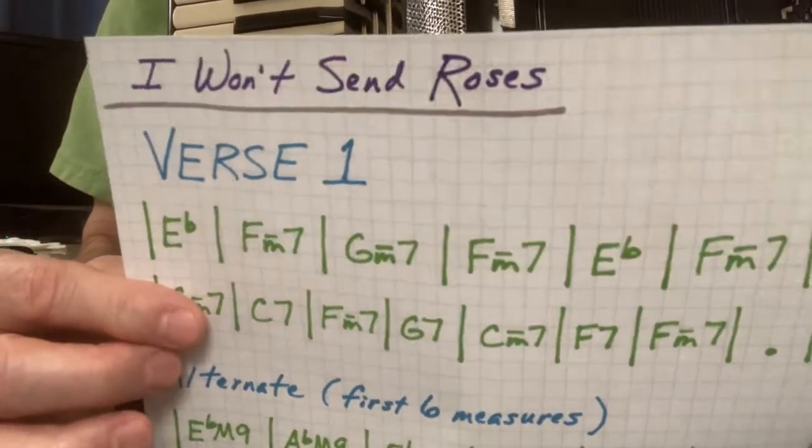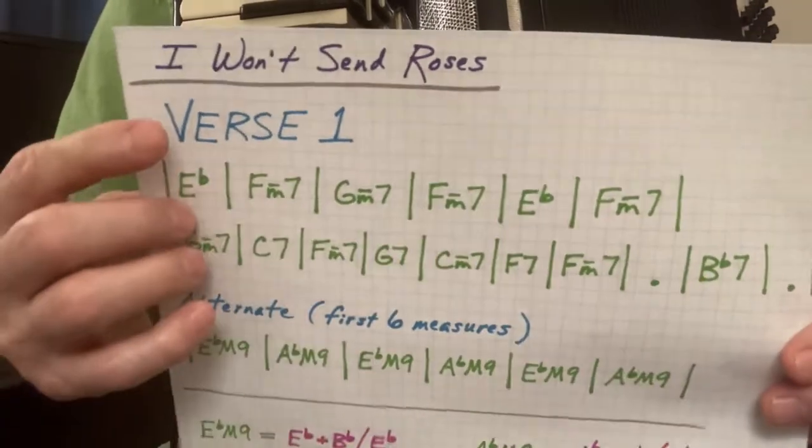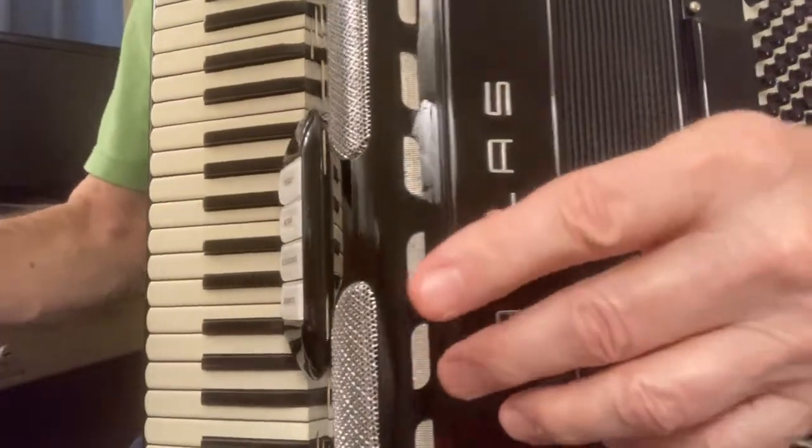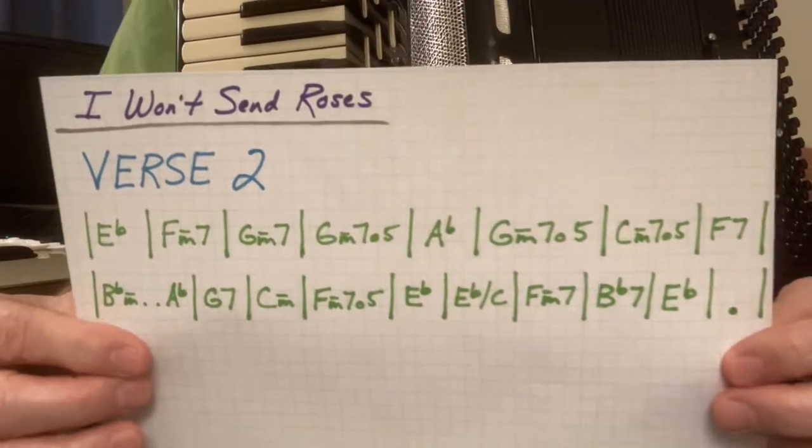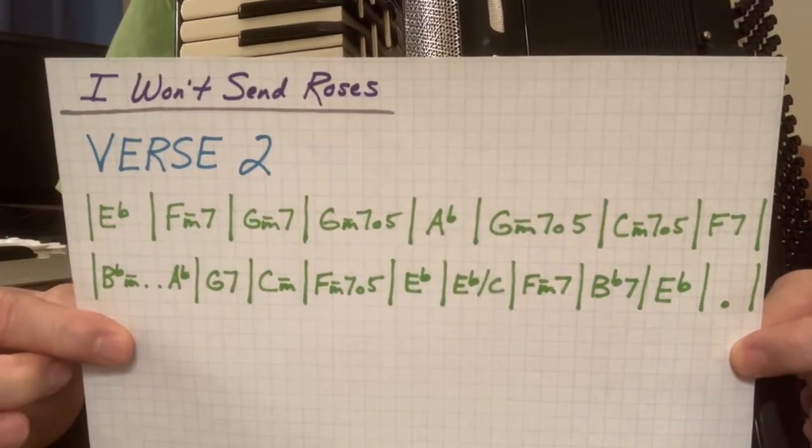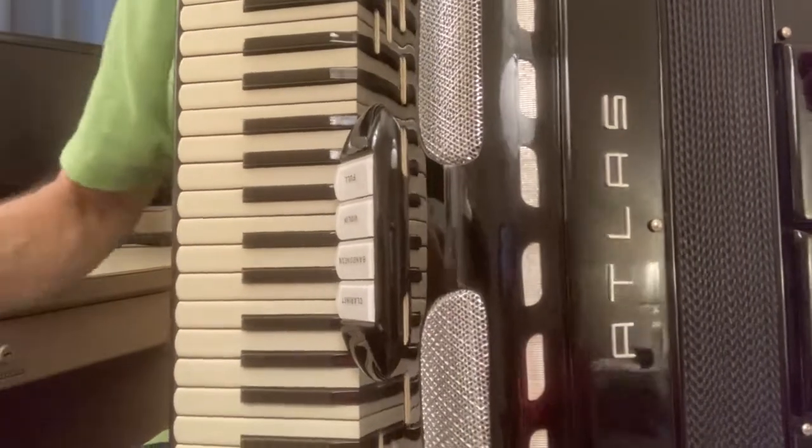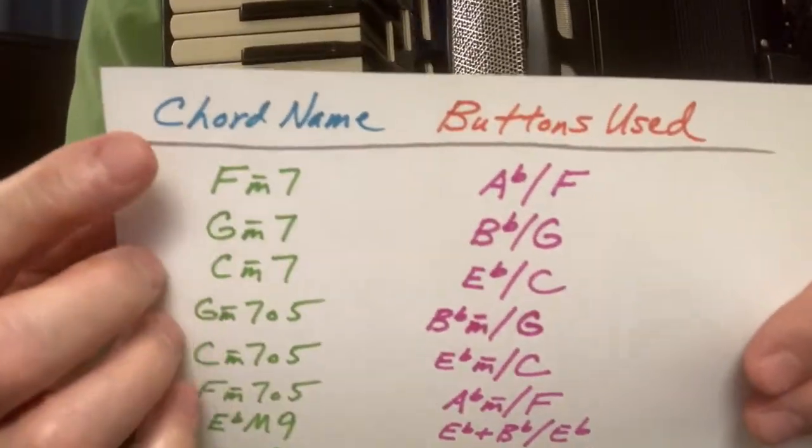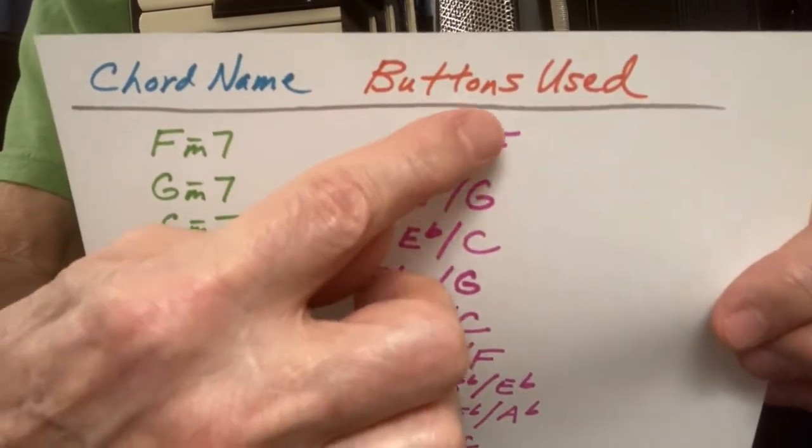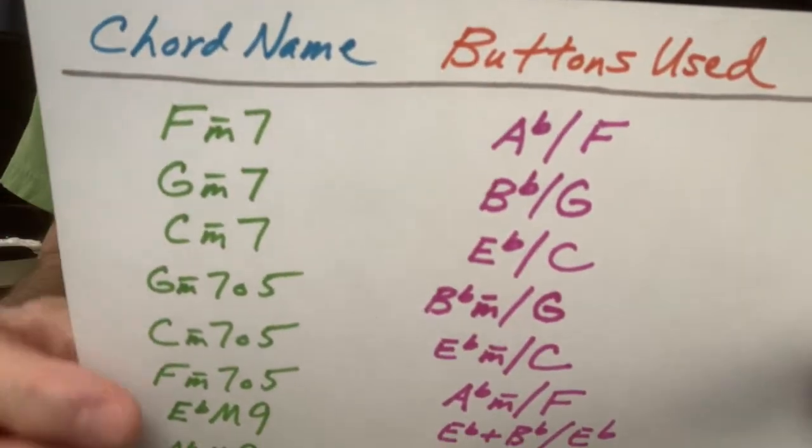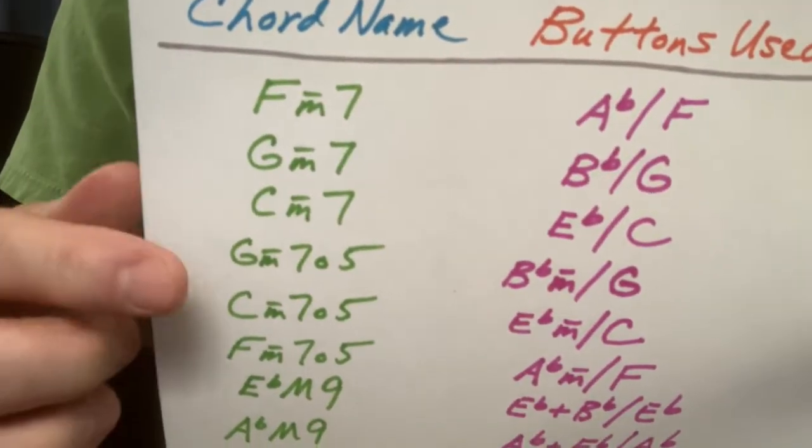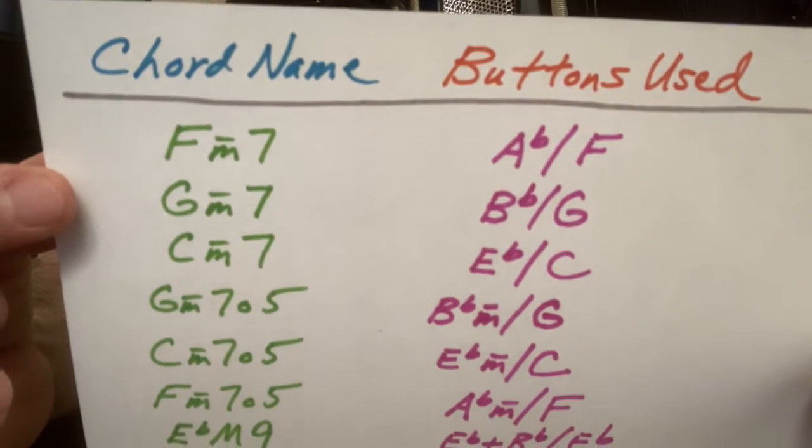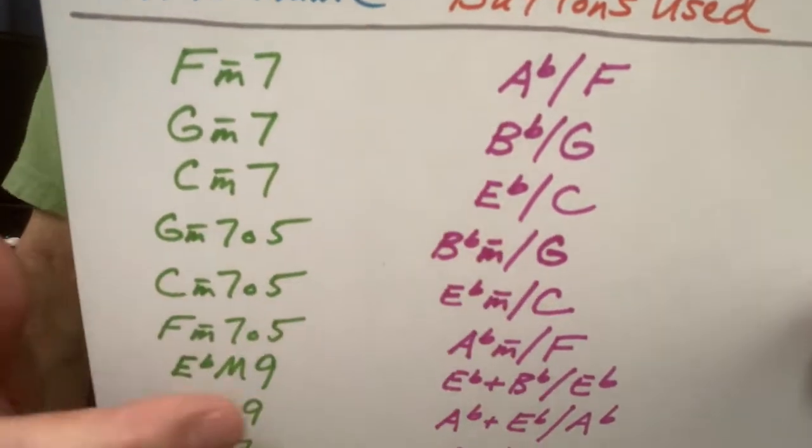It's basically two verses. Here's verse number one, if you can see that. And then there's verse number two, which is slightly different. Instead of taking forever to show you the chords in super detail, I'll just show you my list of formal chord names and the buttons used to create those chords. Here are your different chords and the buttons used to create those chords.